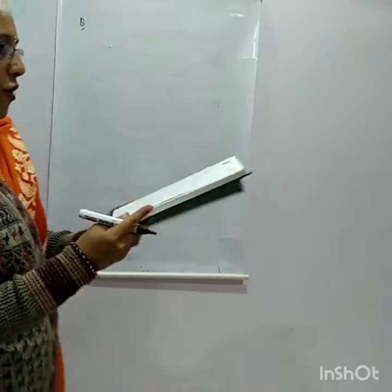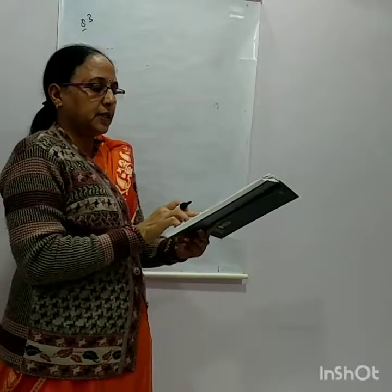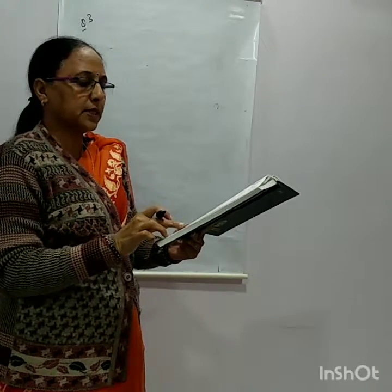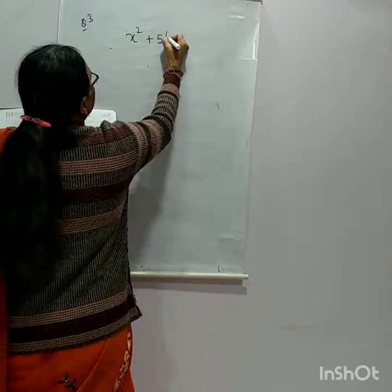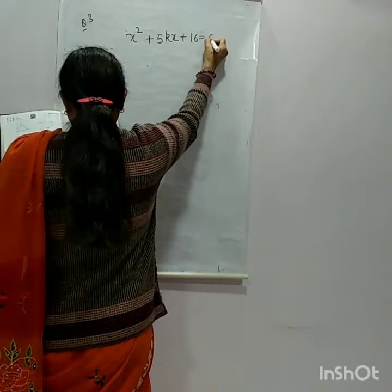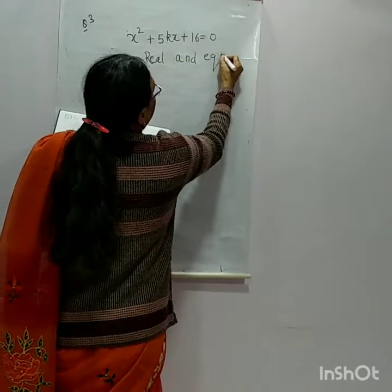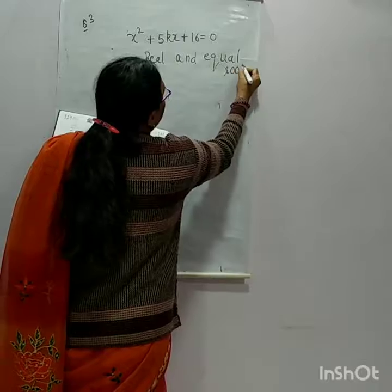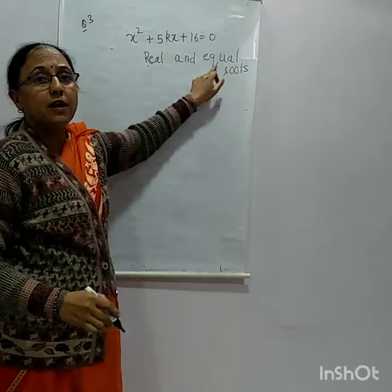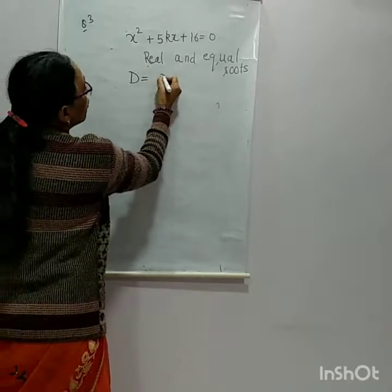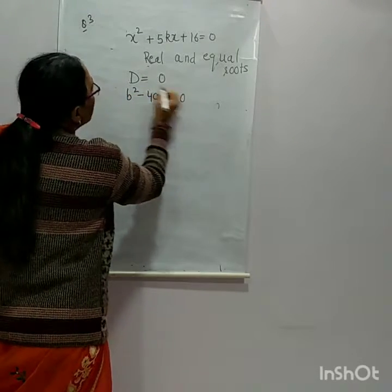Next question: Find K for which the equation X² + 5KX + 16 = 0 has real and equal roots. The condition for real and equal roots is that the discriminant equals 0. The discriminant is B² - 4AC = 0.